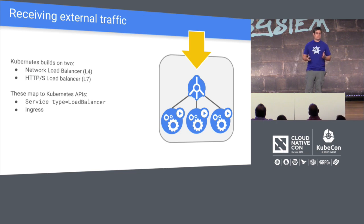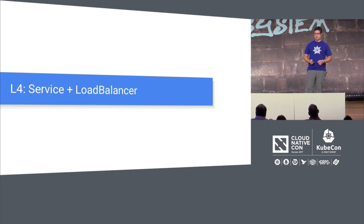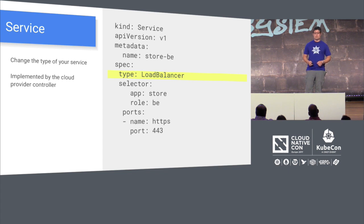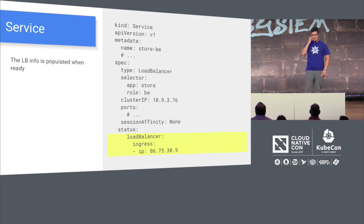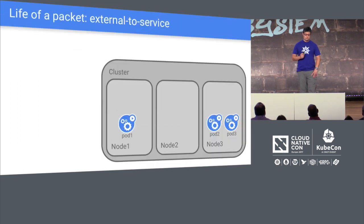Receiving external traffic. There are generally two ways in Kubernetes to receive external traffic: at the L4 level or at the L7 level. We're going to talk about the service load balancer for L4 today. Here's the service — we use the same YAML to create it, but this time we specify load balancer. That creates an external IP address visible to the outside world. Kubernetes sets this up automatically, interacting with the load balancer in the environment. It should evenly balance traffic coming in from that load balancer across the pods.